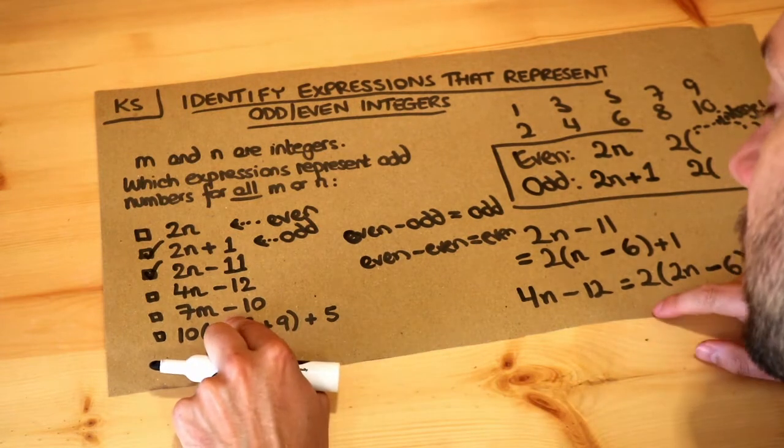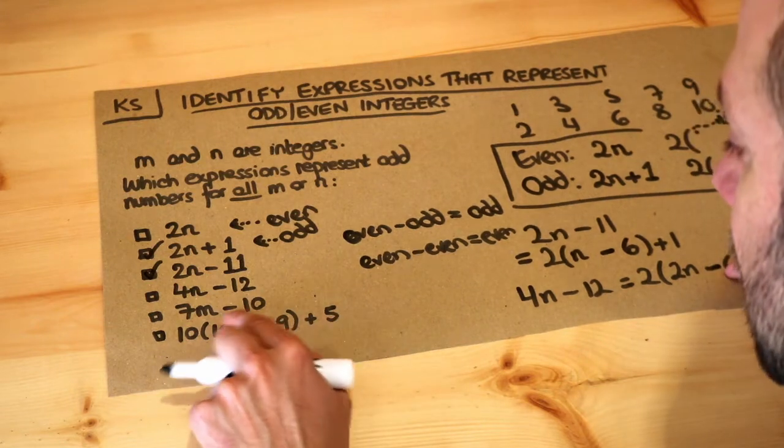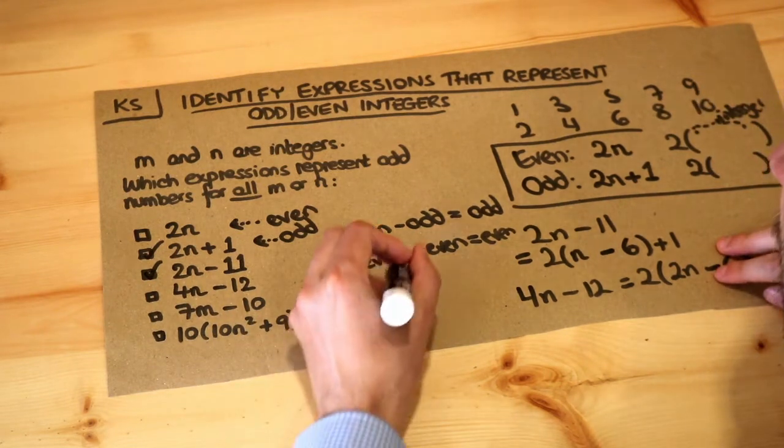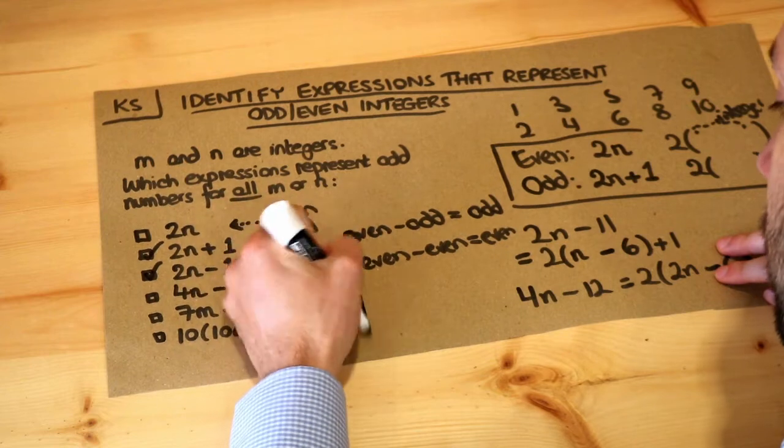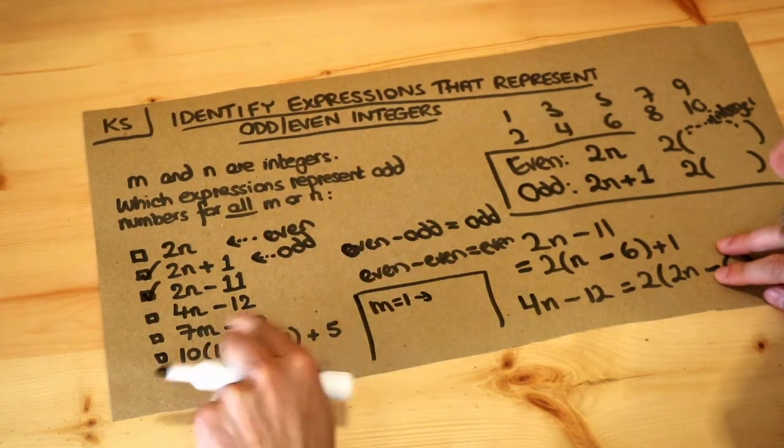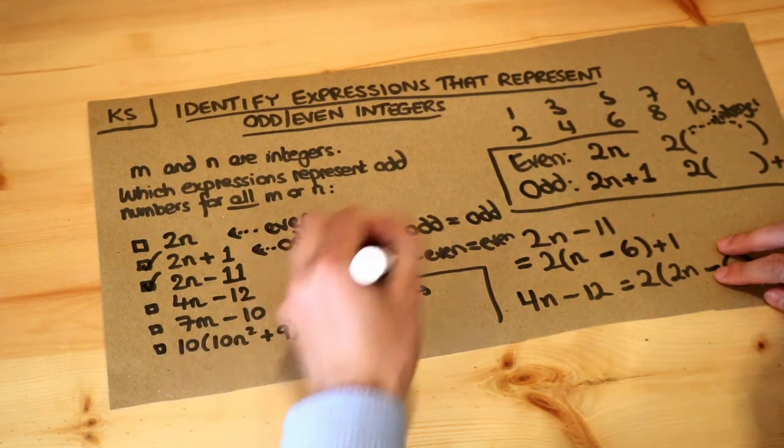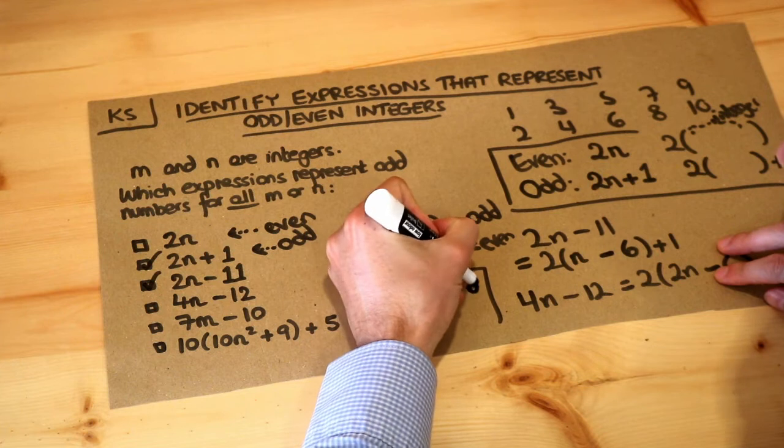What about the next one? 7m minus 10. Now, if you tried different examples, you could see it could be odd or it could be even. So if, for example, m was equal to 1, then 7m minus 10 would be 7 times 1, which is 7 minus 10, is minus 3, which is clearly odd.